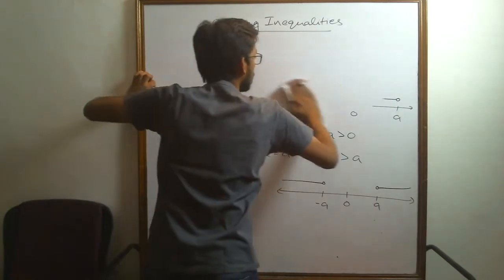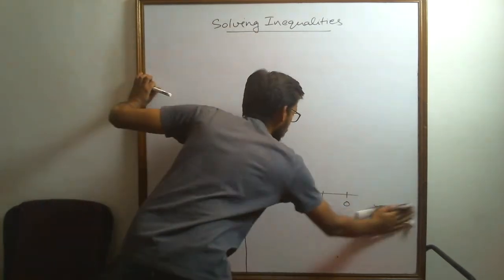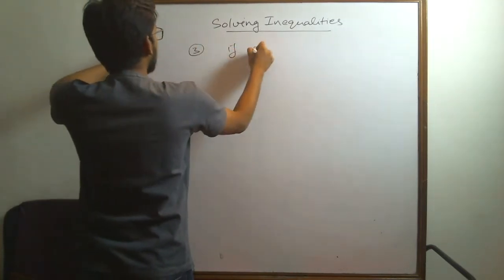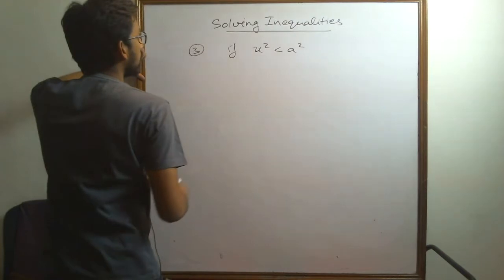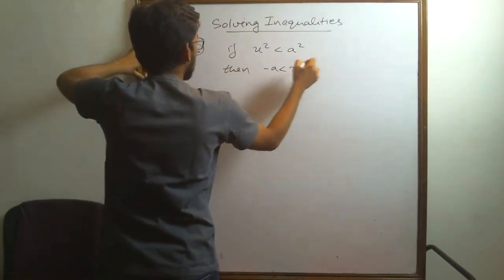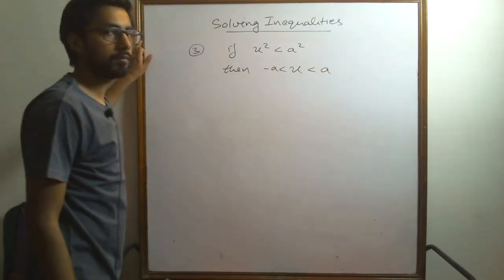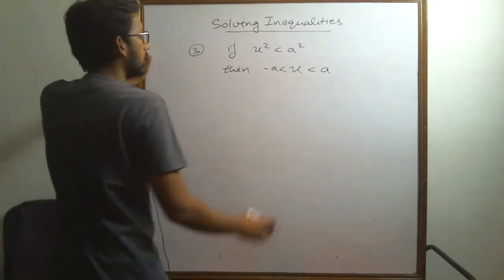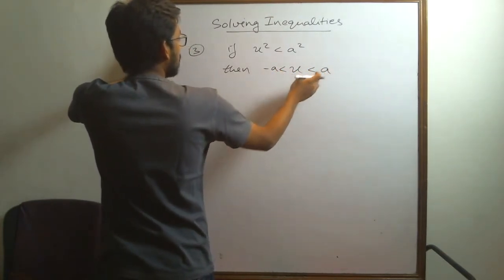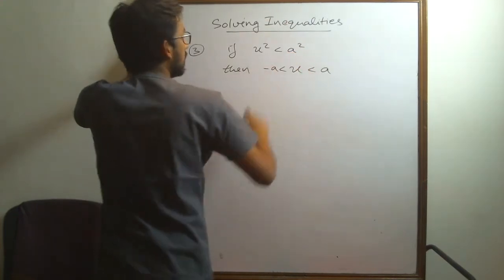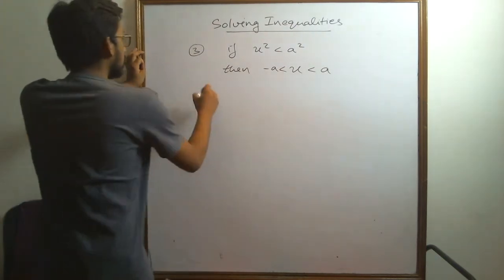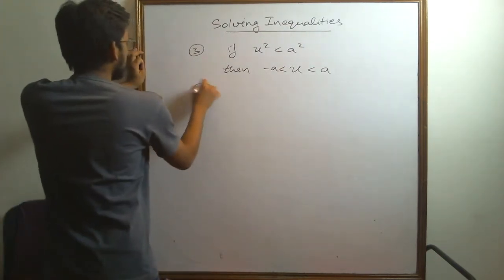Third inequality: if x squared is less than a squared, then x is greater than minus a and less than a. You can think that for a number between minus a and a, if you take the square of that number it will definitely be less than the square of a. So this is the solution of that inequality.